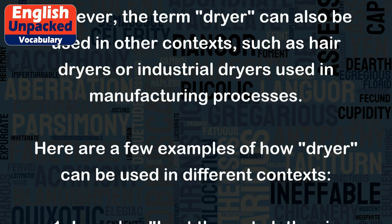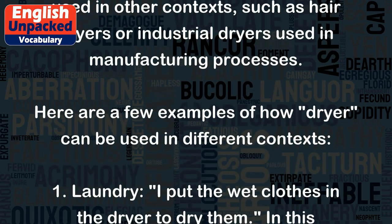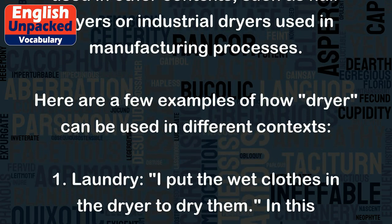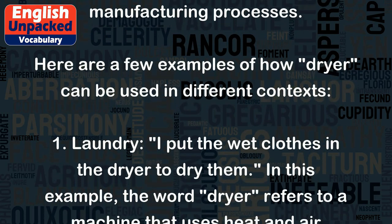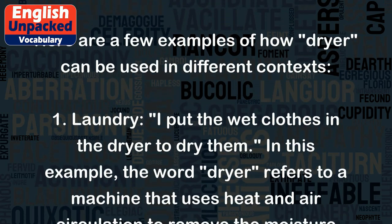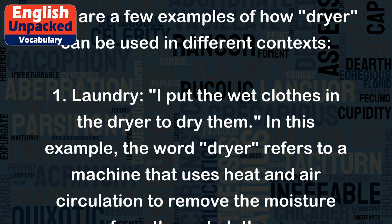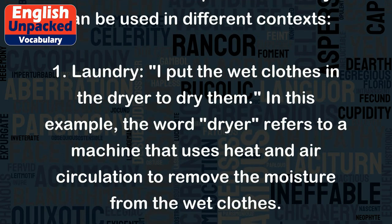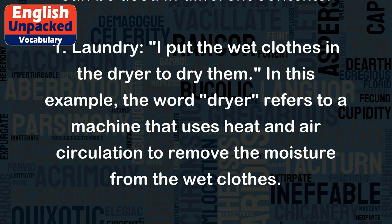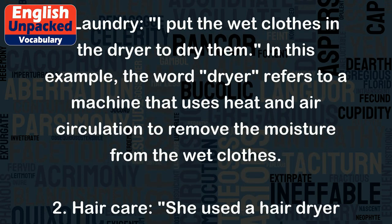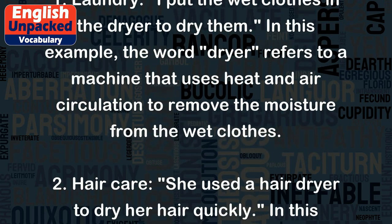Here are a few examples of how 'dryer' can be used in different contexts. 1. Laundry: I put the wet clothes in the dryer to dry them. In this example, the word 'dryer' refers to a machine that uses heat and air circulation to remove the moisture from the wet clothes.